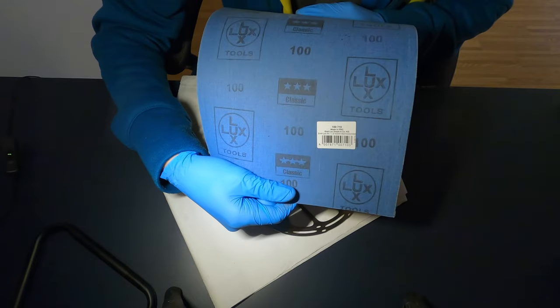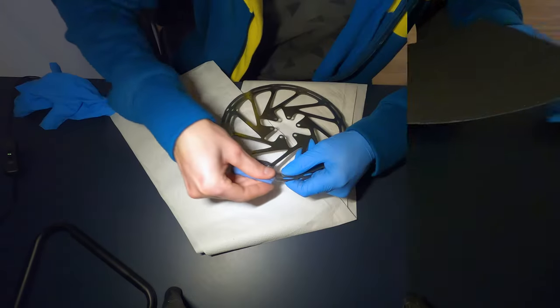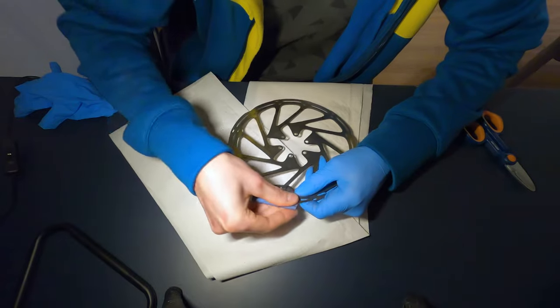To do that, grab a sandpaper with a grain of 100, cut a small piece and wrap the disc as shown in the video.